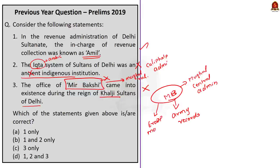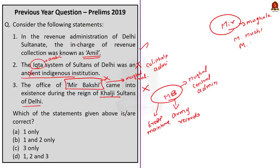A useful trick: if a question in history talks about offices during Mughal period or Delhi Sultanate and the term 'Mir' is present in that office, then know that it existed during the Mughal period only. Other than Mirbaghshi, there was also Mir Saman — in charge of the imperial household and royal workshop — and Mir Munshi, in charge of royal correspondence. Therefore, the correct answer to this question is option A, one only, because the question asks for correct statements.